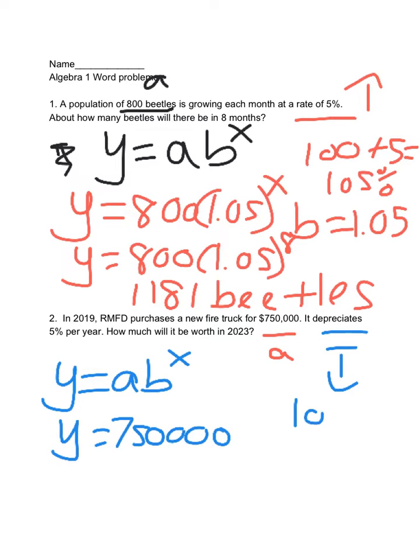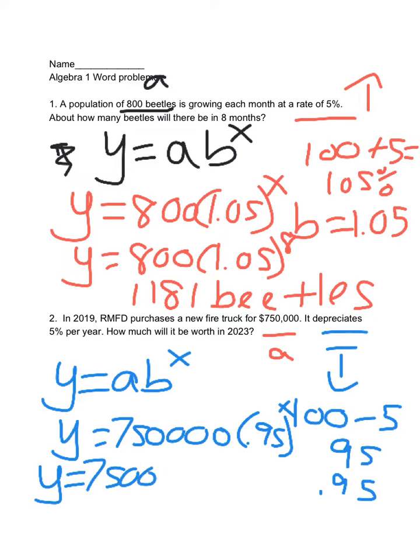I have Y equals 750,000. It's going down, so I start at 100, I decrease by 5, so that would be 95%, which is 0.95 as a decimal. So I have Y equals 750,000 times 0.95 to the X. How much will it be worth in 2023? Well, figure out how much time has passed. 2023 minus 2019 is 4, so 4 years.